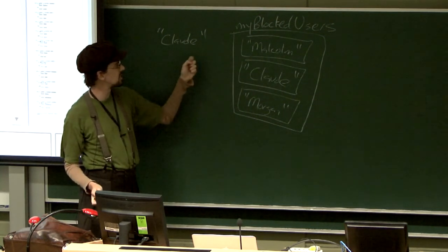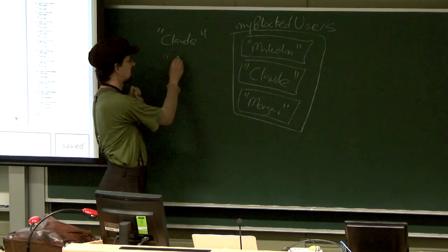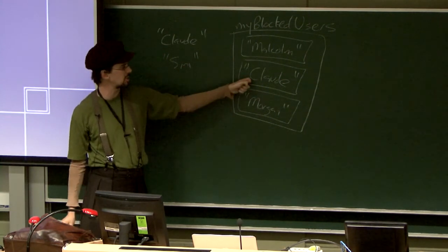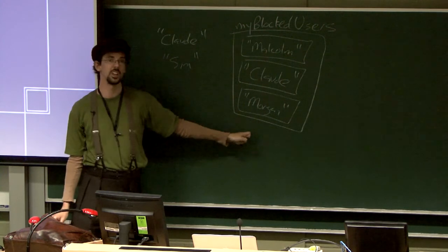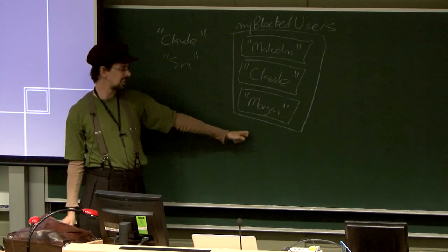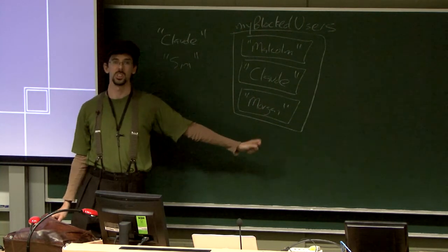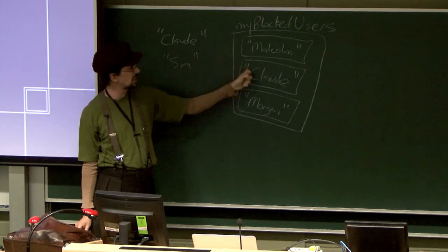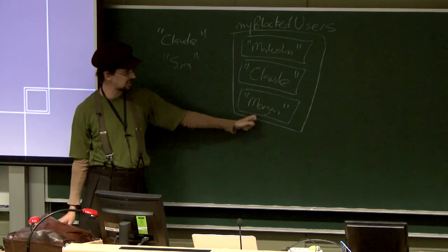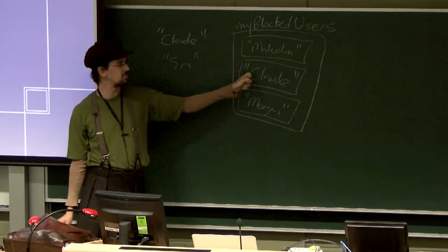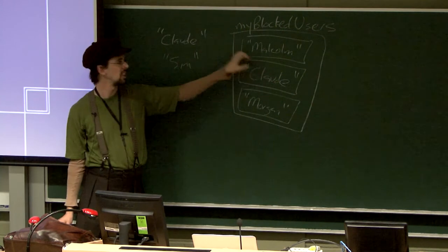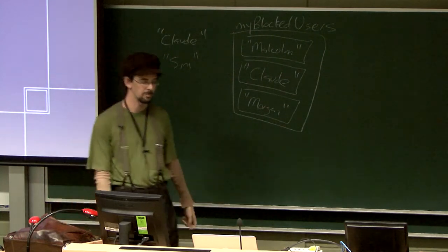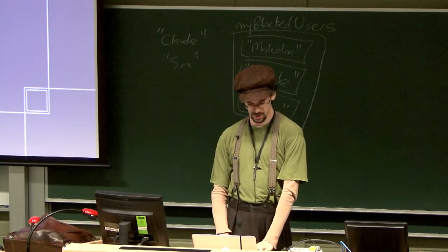There are two cases: either I go through and find somewhere on the list a matching element, or I get to the end of the list and don't find a matching element. If I find a match, I can immediately stop and say yes, there's a match. If I don't find a match and get all the way to the end, I can stop and say no, that user isn't blocked. In fact, I don't need the 'found' variable at all.